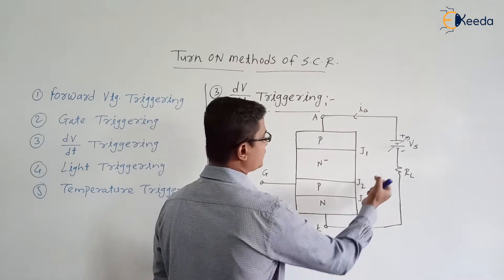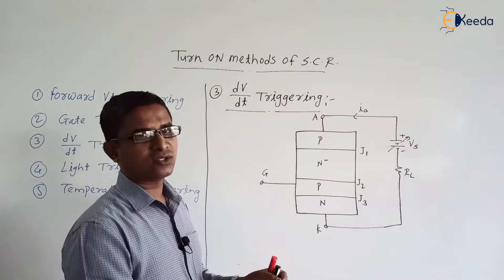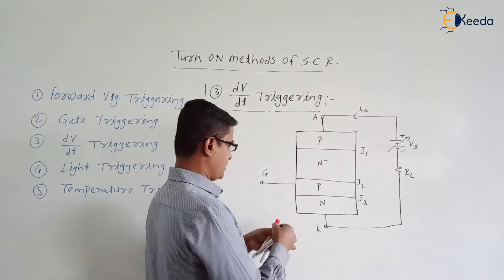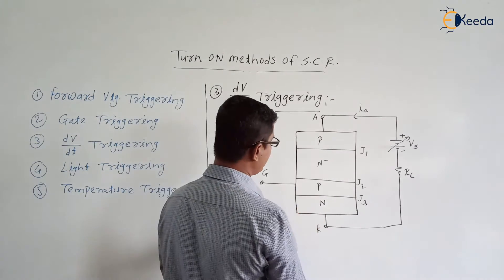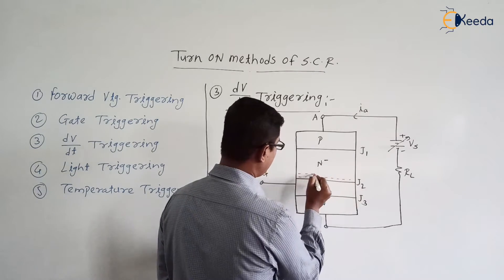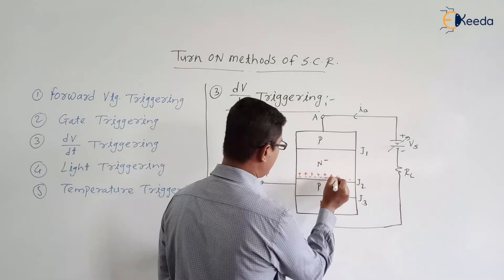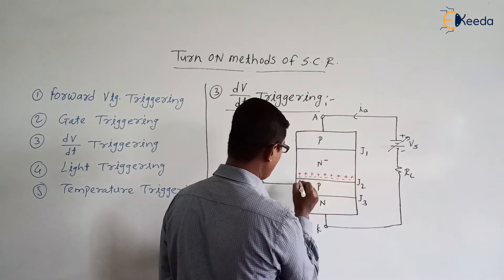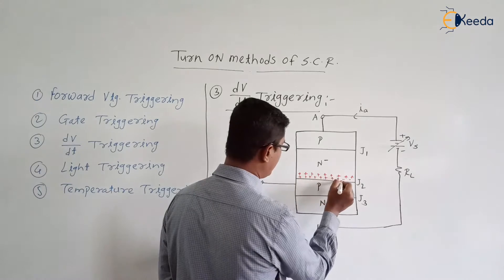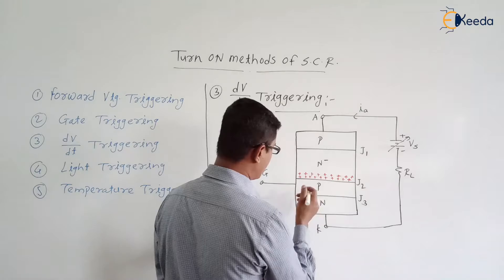As we go on increasing the voltage, junction J1 and J3 width goes on decreasing. But junction J2 width is still increasing. So here, across junction J2 at the N- layer, we are having the positive charge carriers at the depletion layer. At the P side, we are having the negative charge carriers.